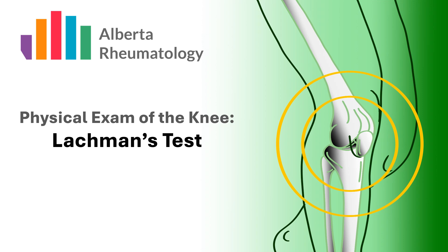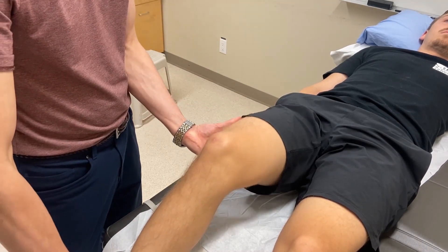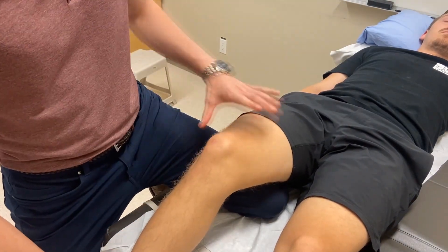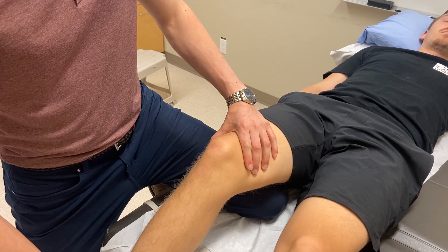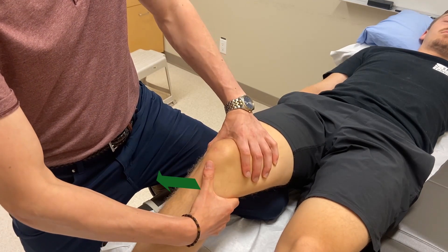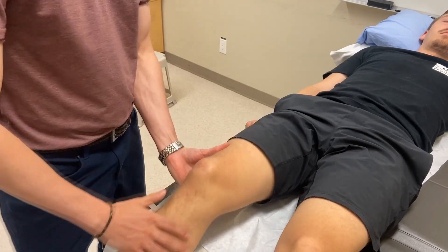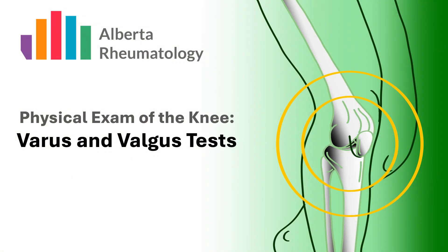Lachman's test is used to determine the laxity or integrity of the anterior cruciate ligament. While not often applicable in most rheumatology assessments, it is important to be familiar with this test as it has better sensitivity for detecting a torn ACL than the anterior drawer test. Begin with the patient in supine with their knee flexed to 30 degrees and their hamstrings relaxed. As the examiner, you can put your knee underneath the patient's leg to help support their knee if needed. With your outside hand, stabilize the patient's thigh just proximal to the knee. With your inside hand, grasp the patient's tibia with your fingers posterior and your thumb on the tibial tuberosity anteriorly. Apply a forward pulling force to the tibia. A positive test will yield a tibia that translates forward to a great extent with a lack of a firm end feel. Ensure to always compare to the patient's other knee.